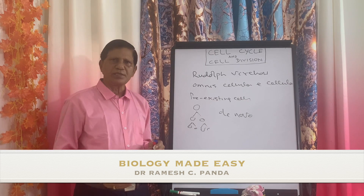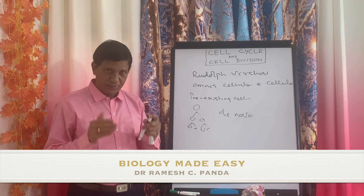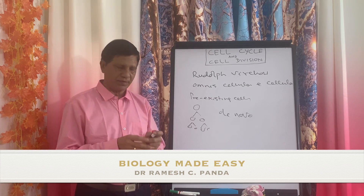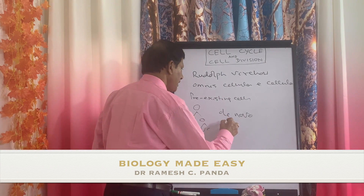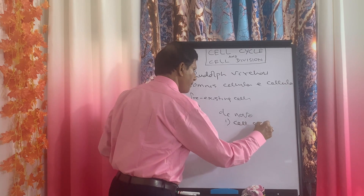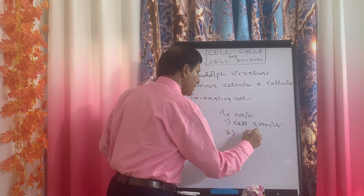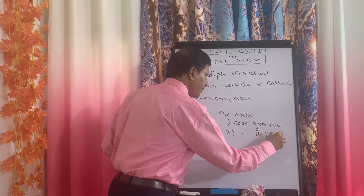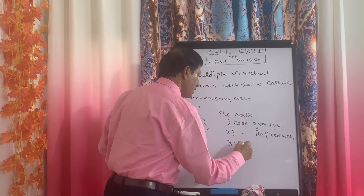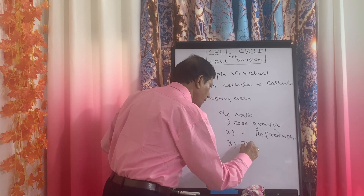For what purpose is cell division required? Because it is a characteristic of living organisms, it must be doing some work. The main functions are: number one, cell growth; number two, cell reproduction; and number three, tissue repairing.